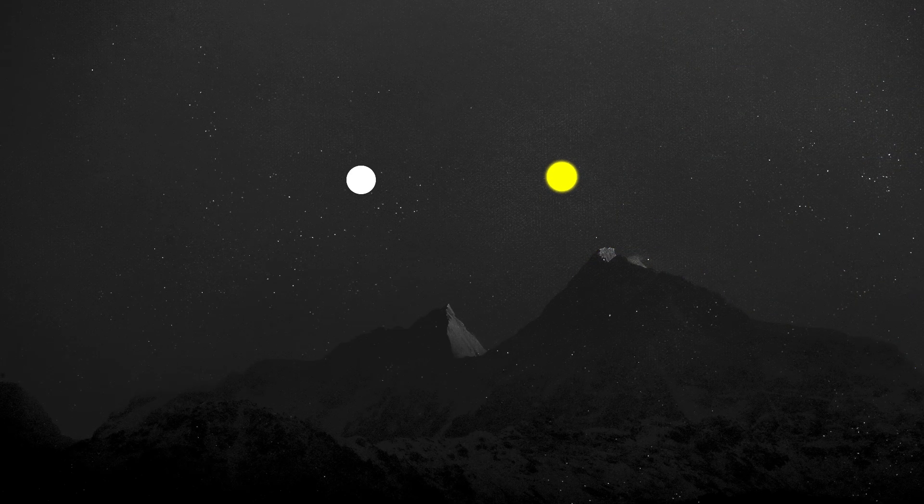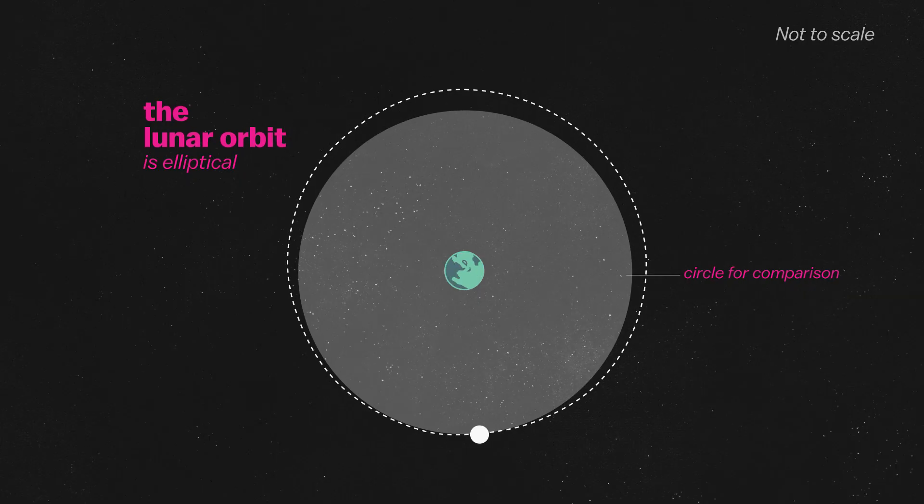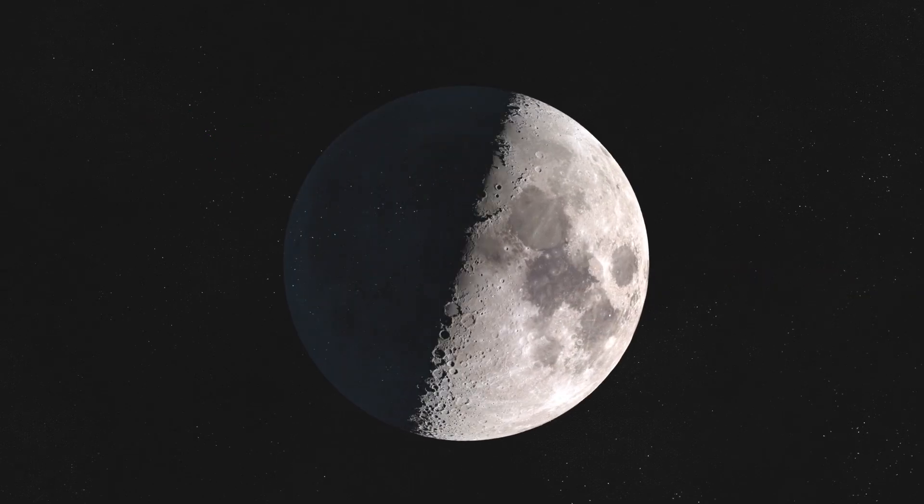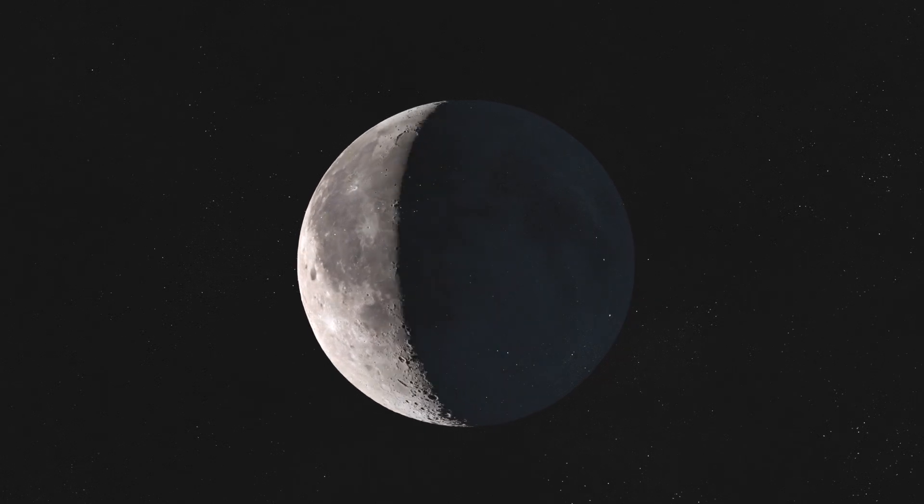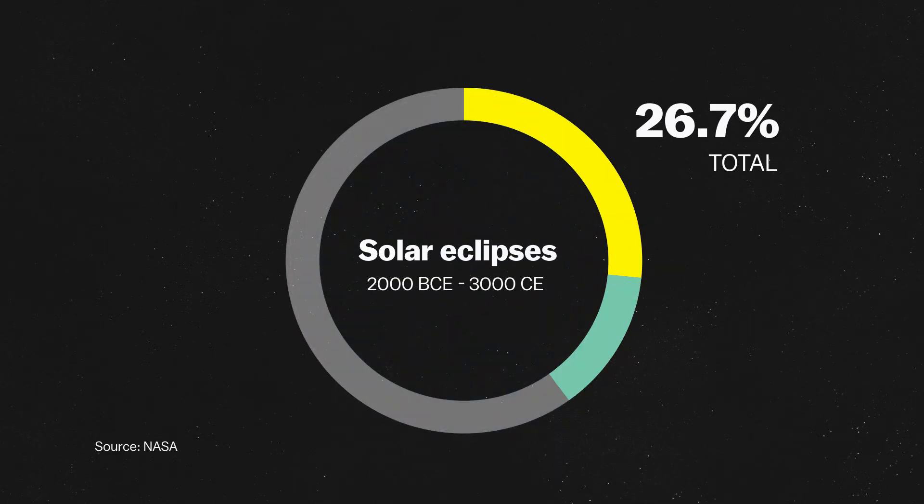But this alignment isn't constant. The moon has an elliptical orbit. Its size varies about 12% throughout the month. When it's closer to us, we can get total solar eclipses. But less than 30% of solar eclipses are total.